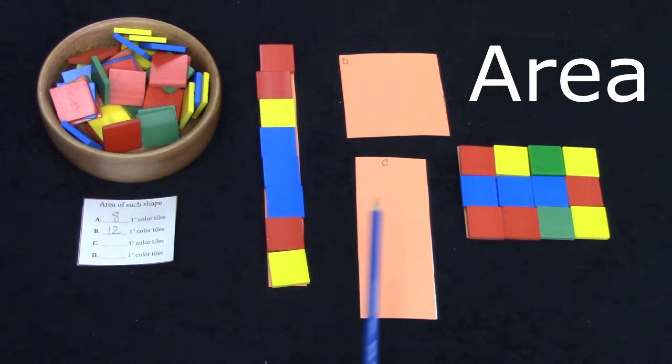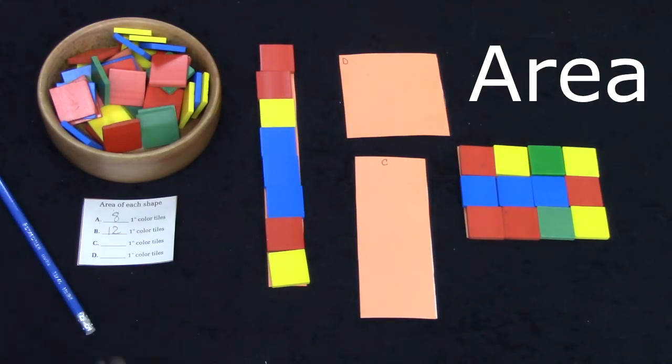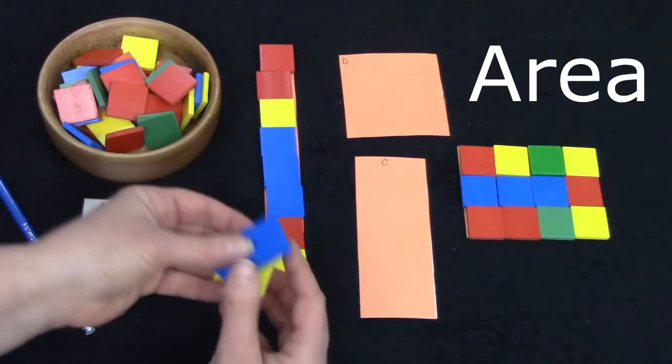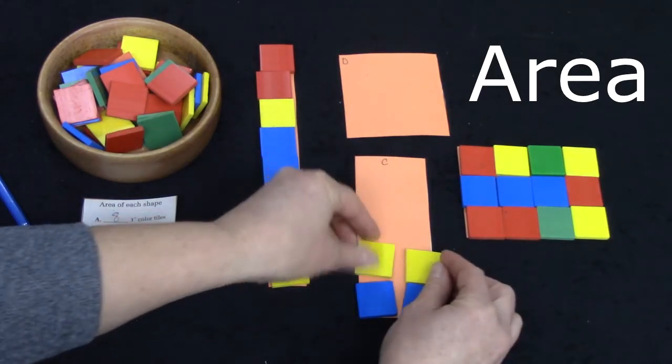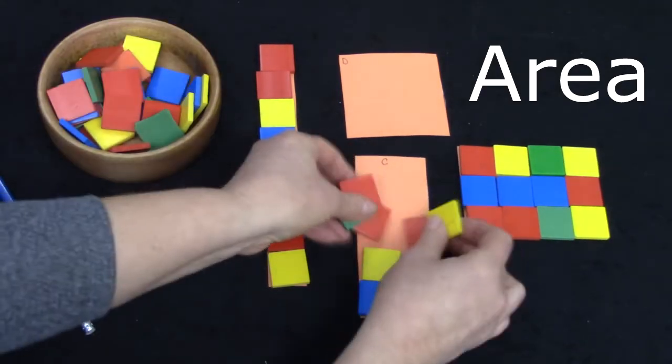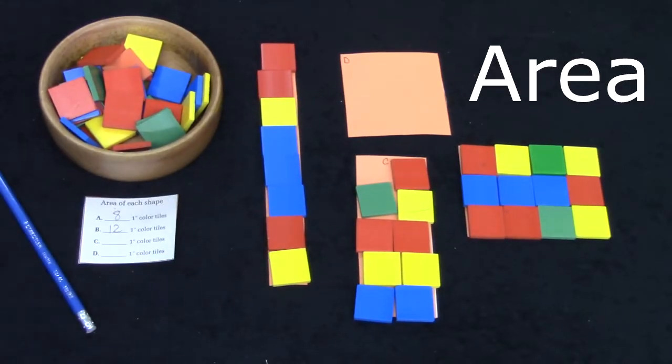Let's look at the area of this shape C. Remember we're not just measuring how long or how wide shape C is. We're measuring the whole area of the shape and I'm going to use these tiles and if you have some tiles I would like for you to get yours out and begin measuring.